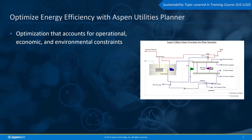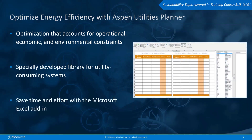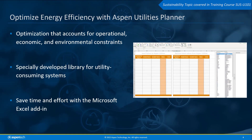Aspen Utilities Planner can help you optimize process utilities while accounting for operational, economic, and environmental constraints. The library model has been developed specifically for utility-consuming systems, and you can use the loadable add-in from Microsoft Excel to easily simulate, reconcile, and optimize process utilities in your flowsheet. For more information on how you can optimize energy efficiency with Aspen Utilities Planner, please go to the website listed in the description below.